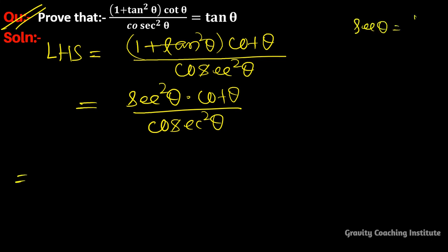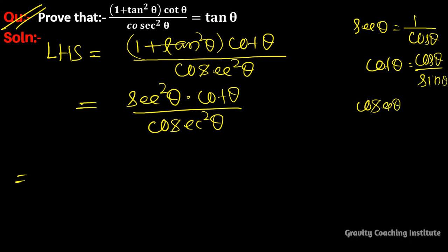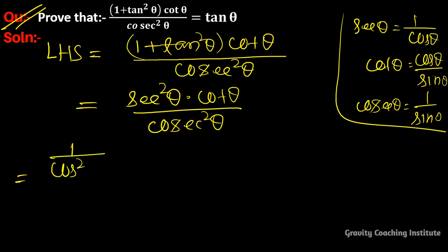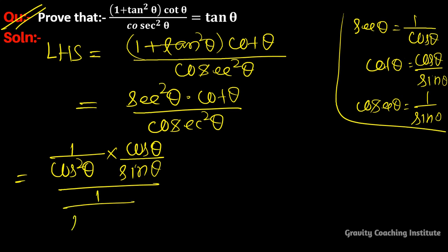We know that secθ = 1/cosθ, cotθ = cosθ/sinθ, and cosecθ = 1/sinθ. So substituting: (1/cos²θ) · (cosθ/sinθ), divided by (1/sin²θ). The cos² and cosθ cancel, leaving 1/cosθ.